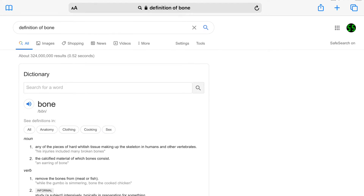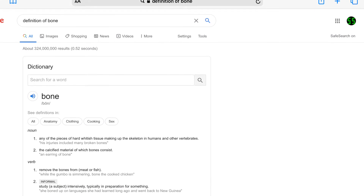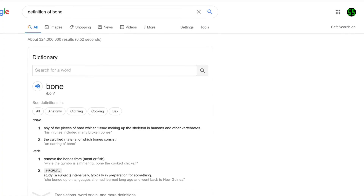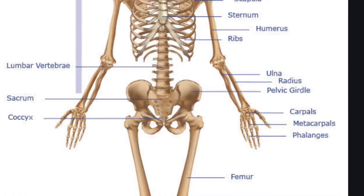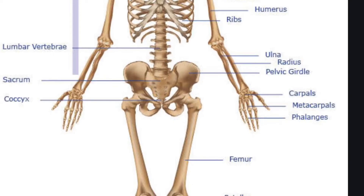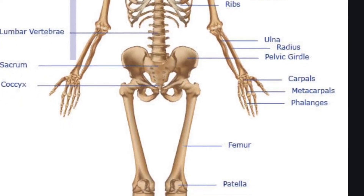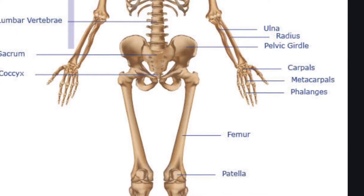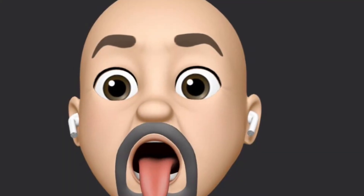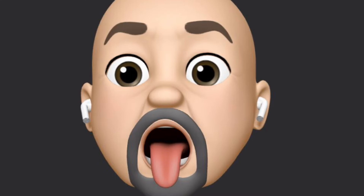Next we have the dictionary definition of bone, which isn't that difficult: any of the pieces of hard whitish tissue making up the skeleton. This skeleton is not moving anywhere without muscles, and the muscles cannot attach to the bone without the tendon. So you can see how all three of these things work together. Don't be scared — it's just a skeleton. Speaking of skeletons, how do they stay together? How do bones connect?